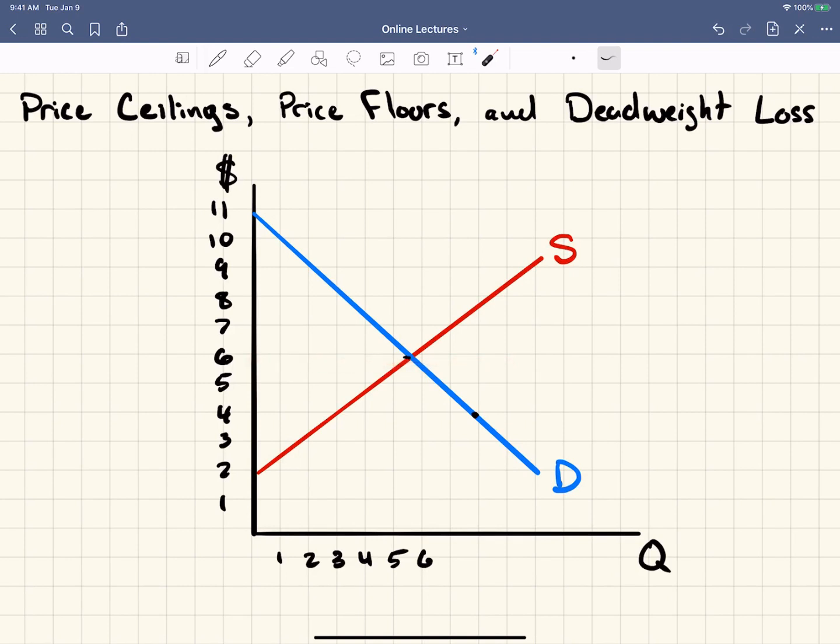But if let's say the government said, you know what, we don't want people to charge any less than $8 for this good or service. This is a price floor because the price wants to drop to here, but it can't because of the floor. So it just falls to the floor and can't get any lower.